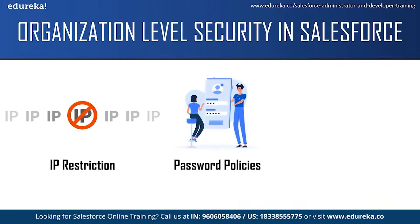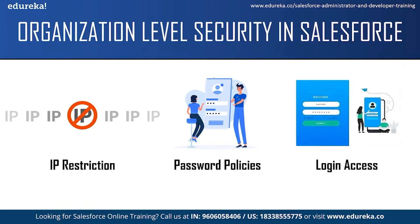Next, we have password policies. You can specify an amount of time before a user's password expires and the type of password required to log in. For example, the password should be at least 10 to 12 characters long, contain at least one symbol, and have both uppercase and lowercase letters and numbers. Having a strong password makes it hard for hackers to guess. Next is login access, where you can specify the hours users can log in — for example, restricting weekend logins or limiting night shift employees to their shift hours.